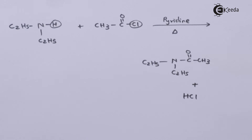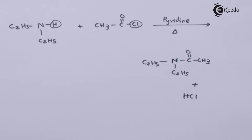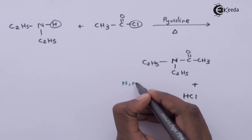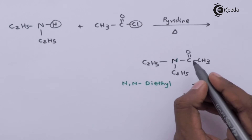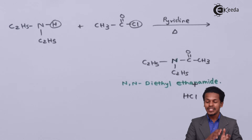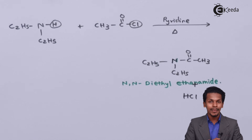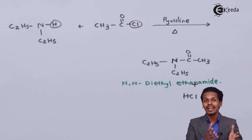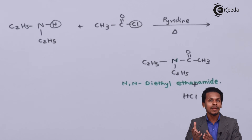The IUPAC name of this product is straightforward: nitrogen has two ethyl groups attached, so the name is N,N-diethyl acetamide, since the acyl part consists of two carbon atoms. Additionally, the amide formed from a primary amine is actually less basic compared to ammonia. Whenever a primary amine reacts with acid chloride such as acetyl chloride, it forms this particular amide.